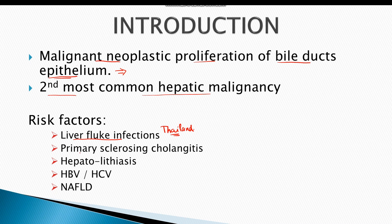Primary sclerosing cholangitis also results in chronic inflammation, hence predisposing to cholangiocarcinoma. Hepatolithiasis, which means formation of stones within the intrahepatic bile ducts, also results in inflammation of intrahepatic bile ducts, predisposing to cholangiocarcinoma.